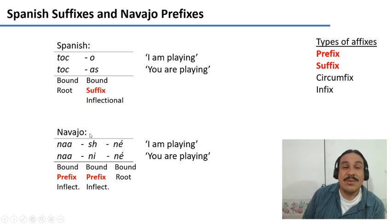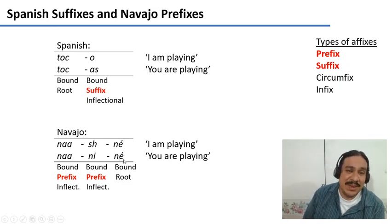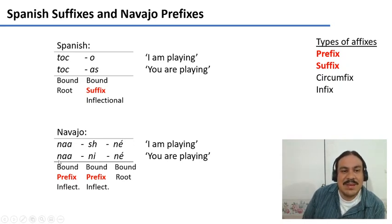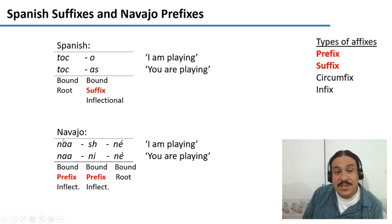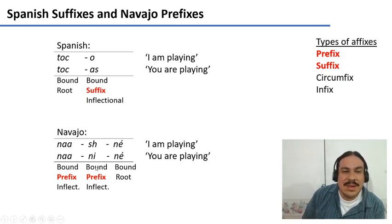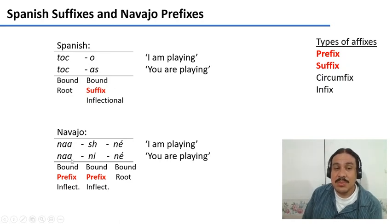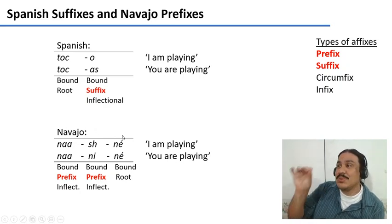In Navajo, the same thing is done with prefixes. We have words like 'nashne' and 'nanine,' meaning I am playing a musical instrument and you are playing a musical instrument. 'Ne' is the root meaning to play. 'Na' is an inflectional prefix that tells you something is a continuous aspect — happening continuously. And then the prefixes 'esh' and 'ni' tell you that the verb is being done by the first person, I, or the second person, you. So Spanish uses suffixes for verbal conjugation, Navajo uses prefixes. And Swahili also uses prefixes to tell you the first and second person.